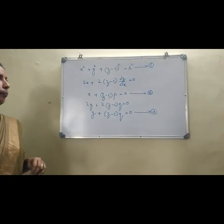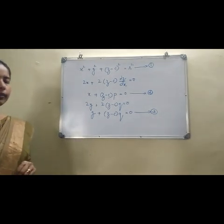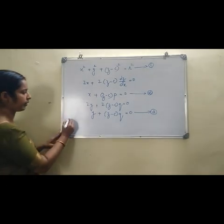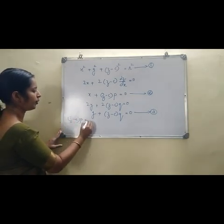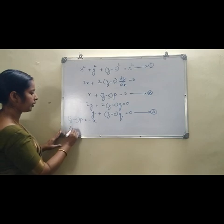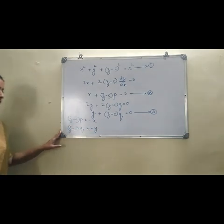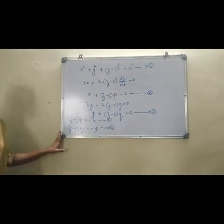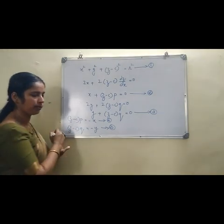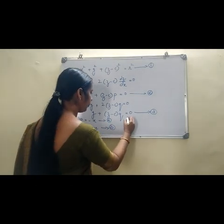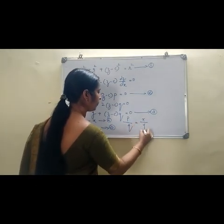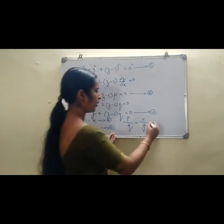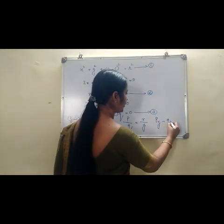Next, eliminate c from equations 1, 2, and 3. From equation 2: (z − c)p = −x. From equation 3: (z − c)q = −y. Dividing equation 2 by equation 3, (z − c) cancels, giving p/q = x/y. By rewriting: py − qx = 0.